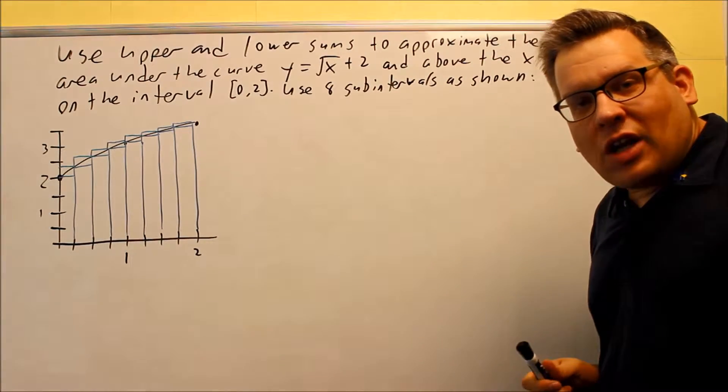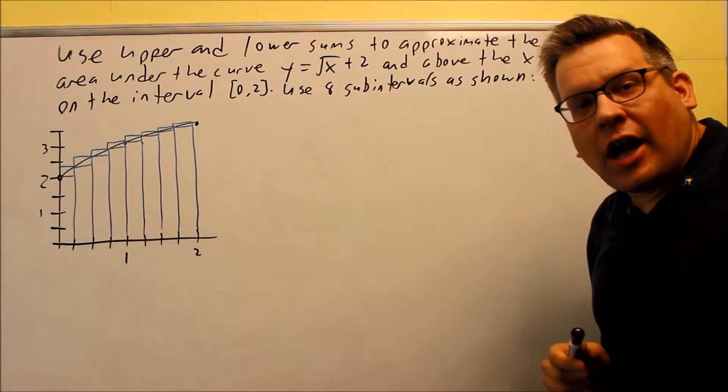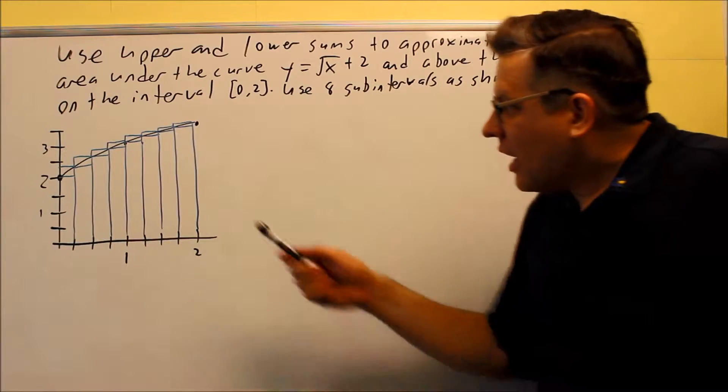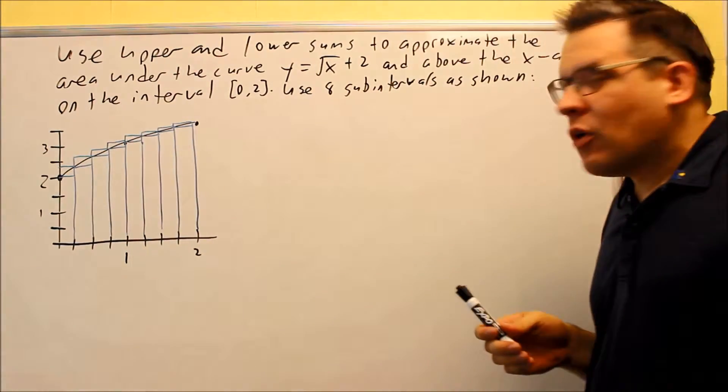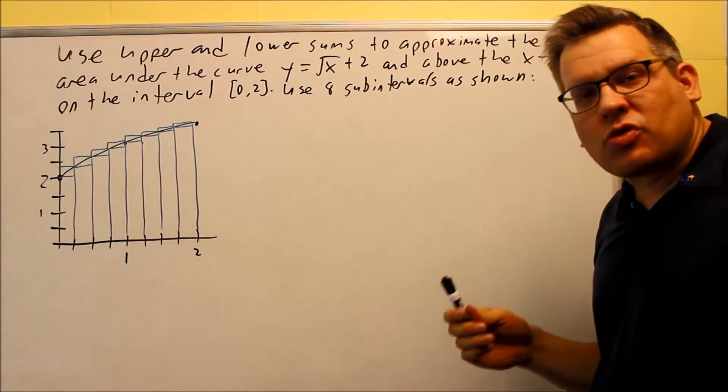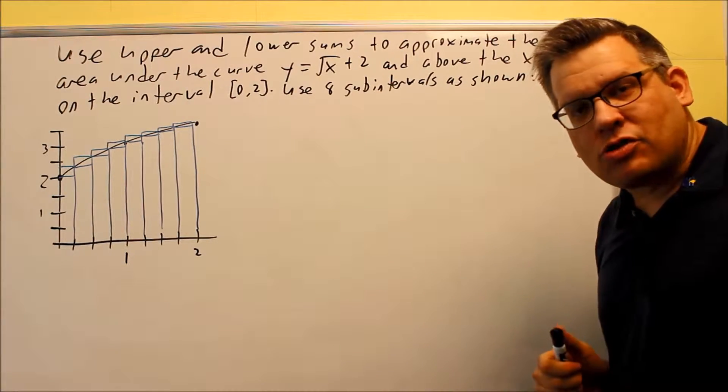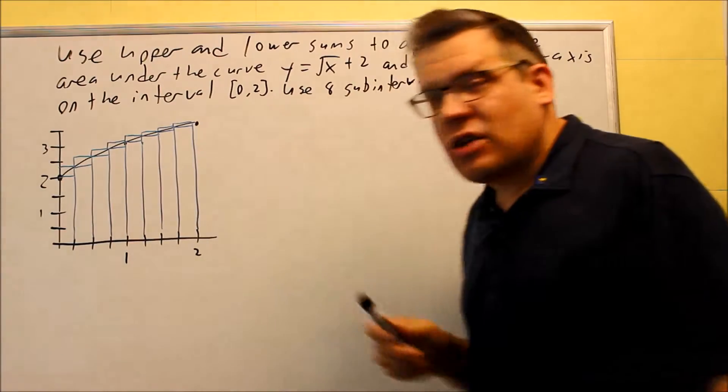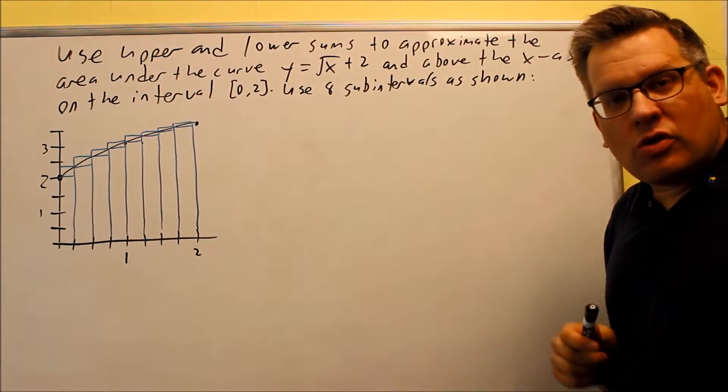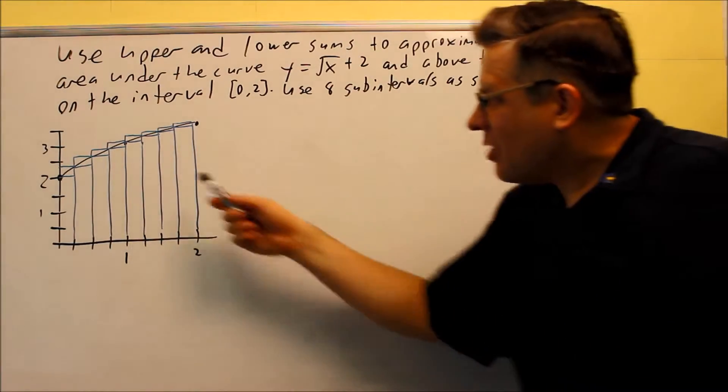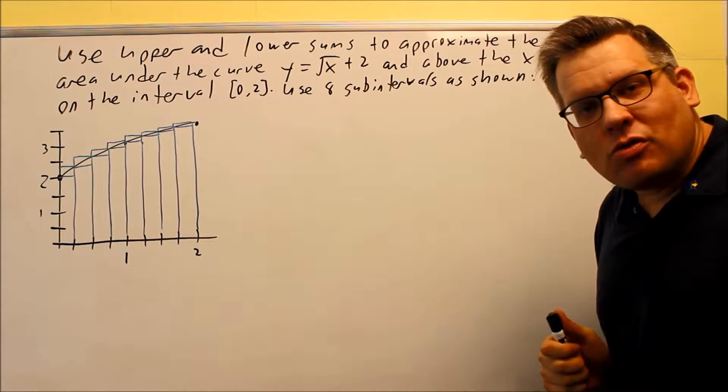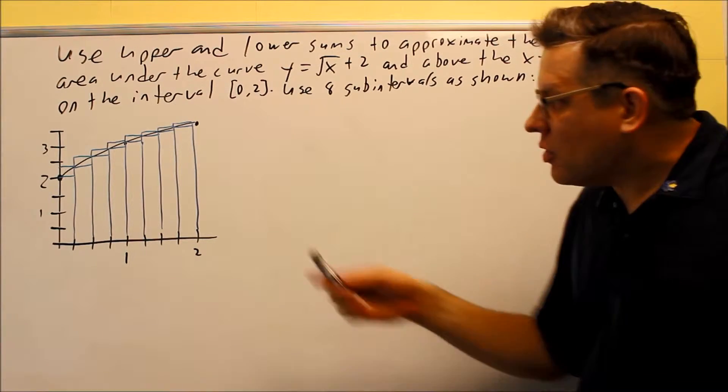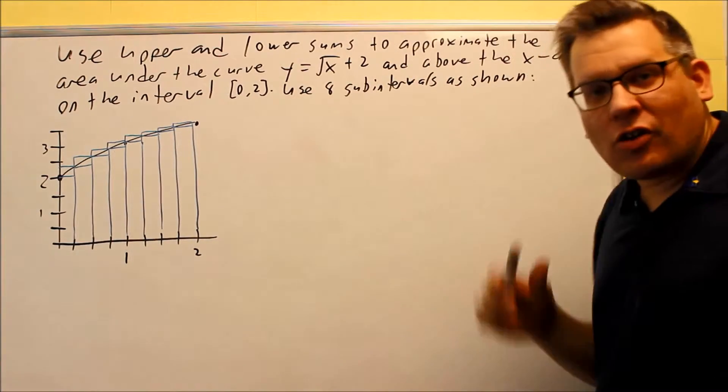Because we're using 8 rectangles, we should get a little bit more accurate area, and the space is a little bit smaller between these, so that means when I get my lower and upper sums, those two numbers are probably going to be closer to each other. If we were to only use 4 rectangles, there would be a lot more space and the range would be a lot more in between those two lower sum and upper sum areas.